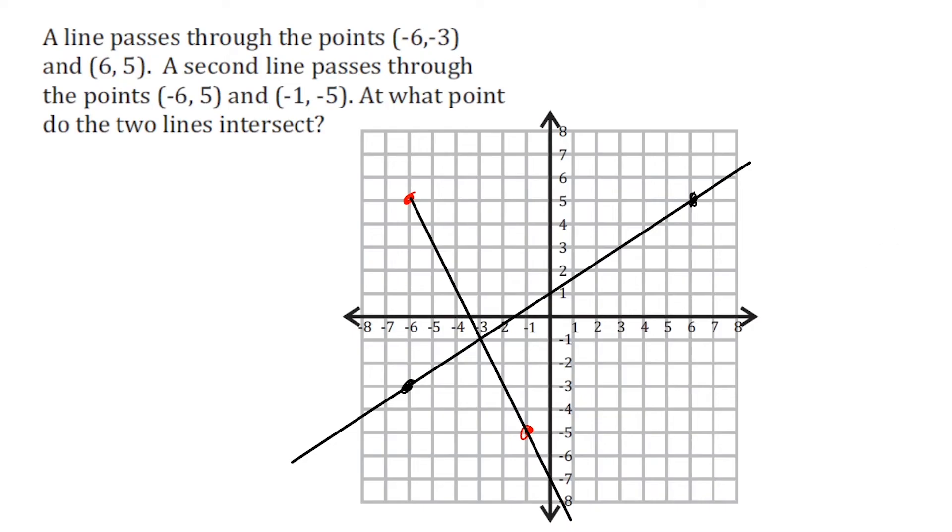Alright, now we can see that our two lines are intersecting precisely at this location right here. The x value is negative 3, alright, and the y value is negative 1. So that is where those two lines intersect each other. Alright, let's go to the next problem.